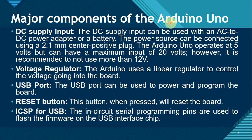The major components of the Arduino Uno include: the DC supply unit, where the DC supply input can be used with an AC to DC power adapter or a battery connected via a 2.1mm center-positive plug. The Arduino Uno operates at 5 volts but can have a maximum input of 20 volts; however, it is recommended not to use more than 12 volts. The standard is 5 volts — exceeding this risks making your Arduino non-functional.